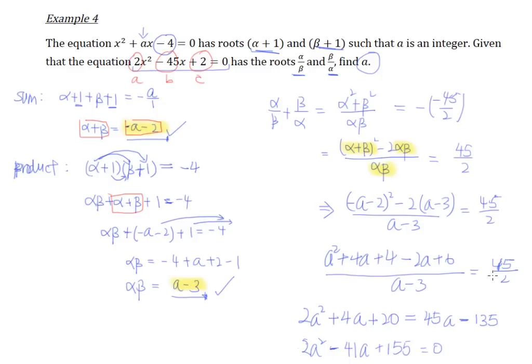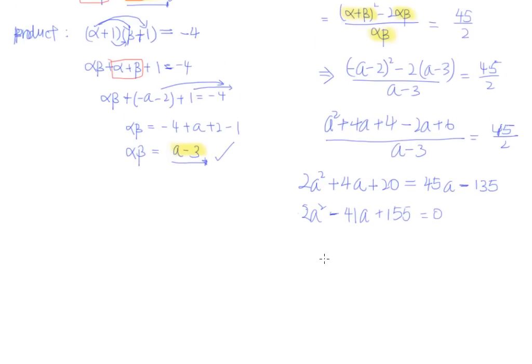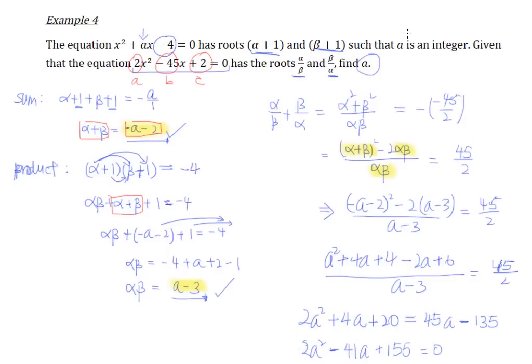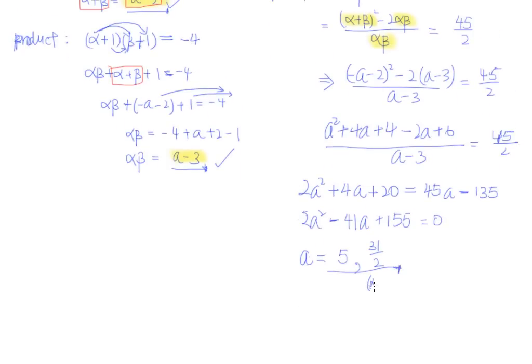So let us fish out our calculator. And from the calculator, using a calculator that you can solve a quadratic equation, we will be able to get the answer of a equals to 5 or a equals to 31/2. And since right from the beginning, the question actually tells us that a is an integer, therefore we will have to reject this answer of 31/2, which is labeled as not applicable. So our final answer for a is a equals to 5.